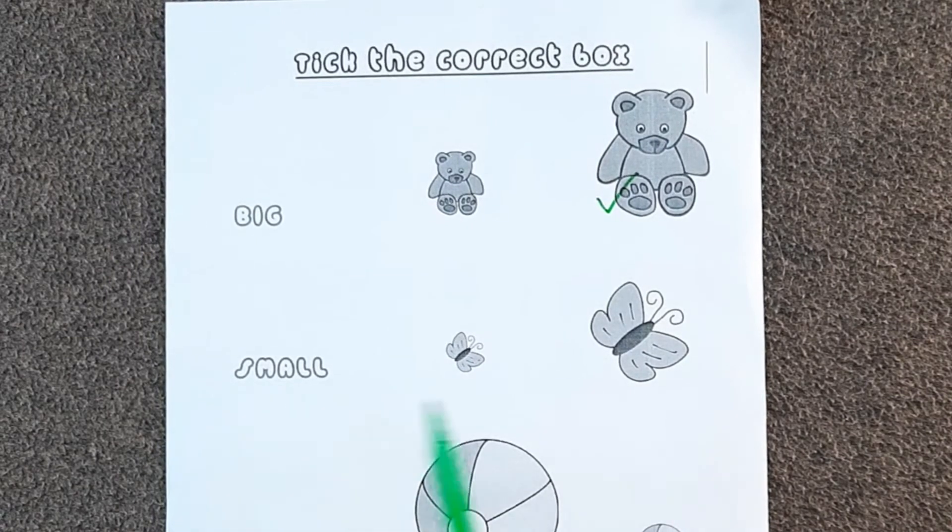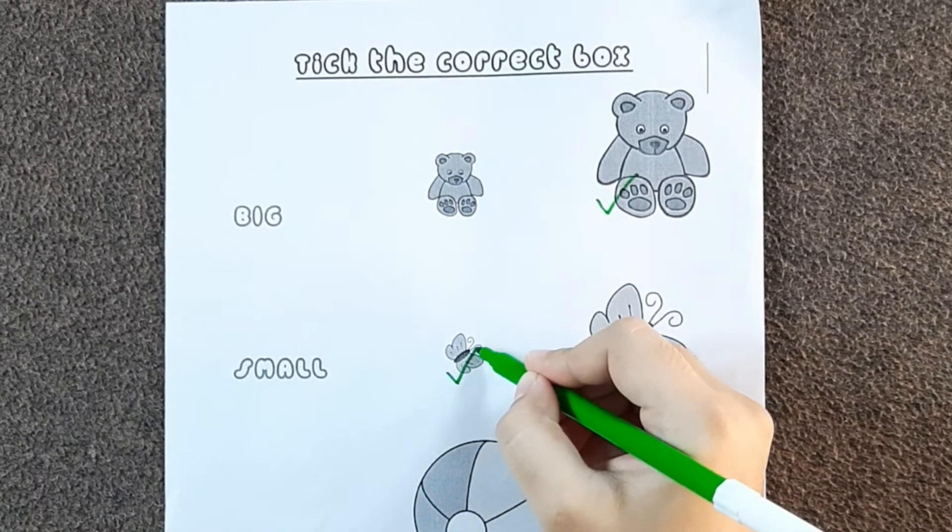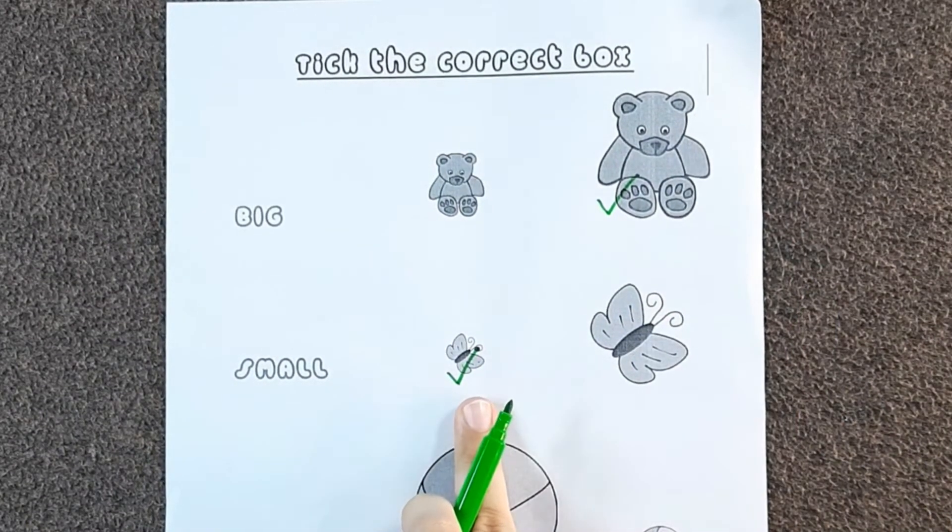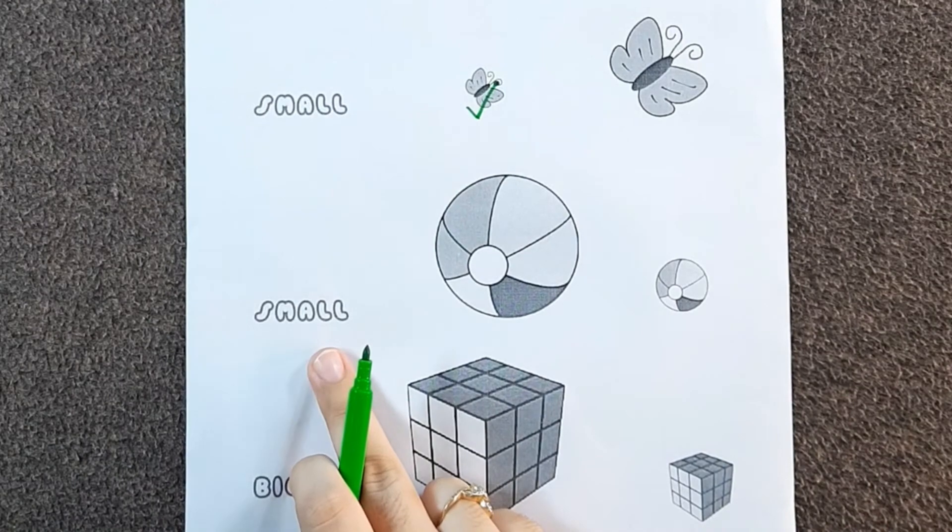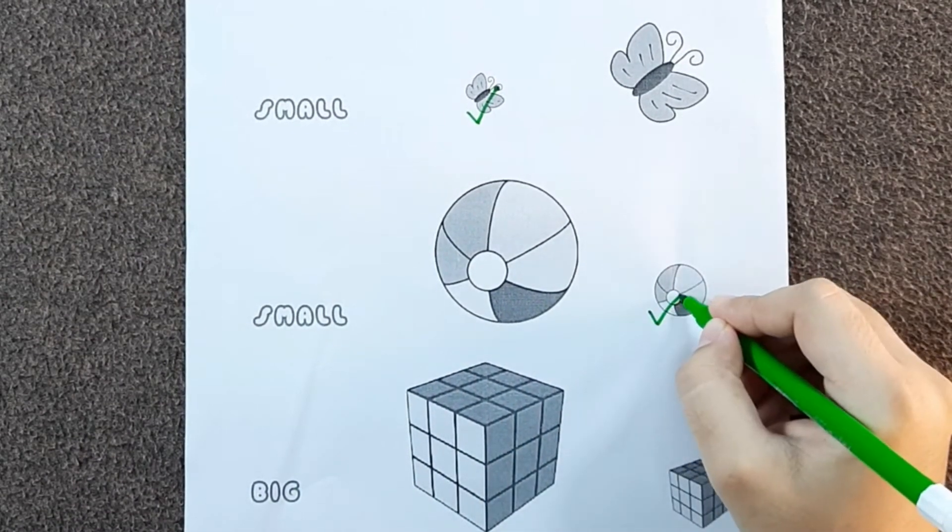It is written small. Which butterfly is small here? Yes, this is small. So you have to tick the small one. Which ball is smaller? Yes, this ball is smaller.